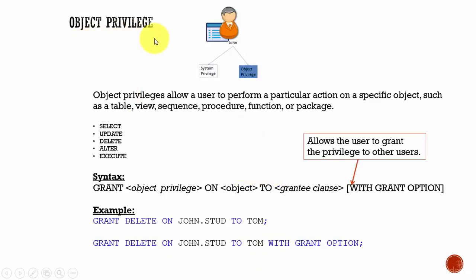Now let's look at object privileges. The object privilege allows the user to perform a particular action on a specific object — that object can be a table, a view, a sequence, a function, a package, or any other database object. For example, a user can have a SELECT privilege on a table, an EXECUTE privilege on a function, or an ALTER privilege on the customer table. Object privileges are very specific to a database object.